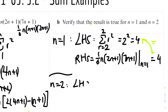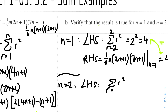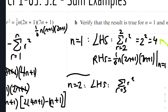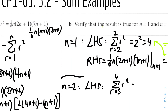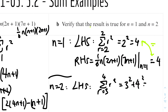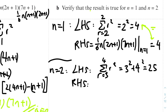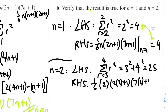For n equals 2: the left-hand side is the sum of r squared from r equals 3 to 4 — since n+1 = 3 and 2n = 4. So it equals 3 squared plus 4 squared = 9 plus 16 = 25. The right-hand side equals one-sixth times 2 times (2(2)+1) times (7(2)+1) = 25. Both sides equal 25. Q.E.D. — what needed to be shown has been shown.